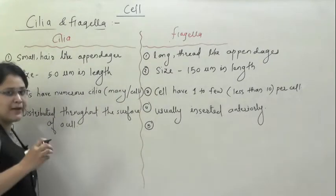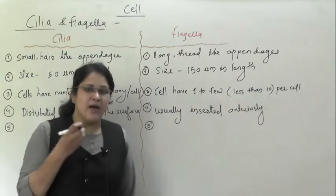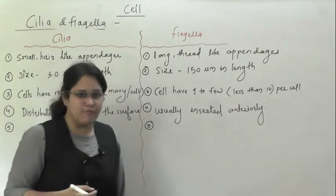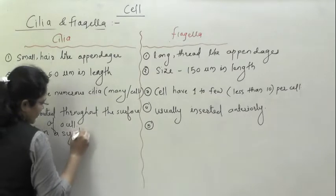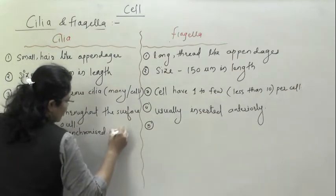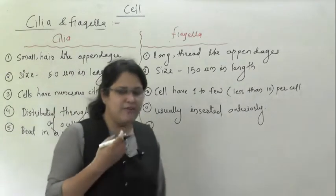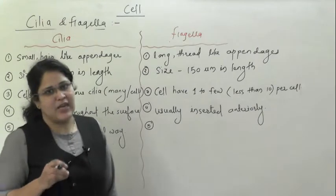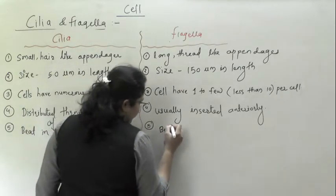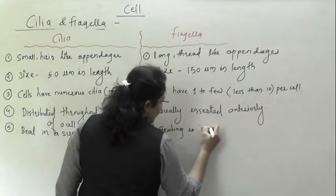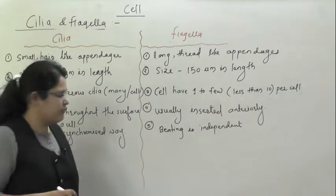The next difference is with respect to beating. Cilia always beat in a synchronized fashion — all the cilia beat at the same time, causing movement of the cell or surrounding medium. Whereas flagella beat independently. If a cell has more than one flagellum, all those flagella move independently; they never beat together.